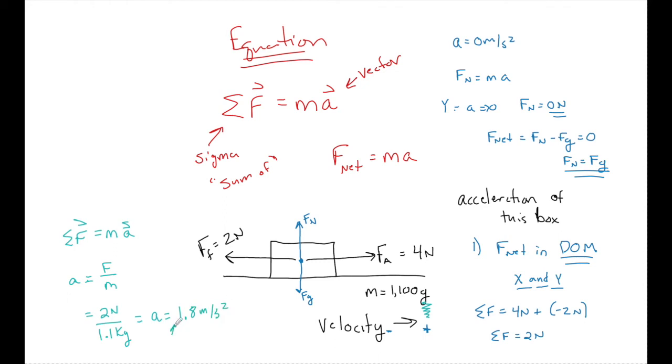We can now say that the acceleration of this box is equal to 1.8 meters per second squared. This number is a positive number, so that means it is to the right. Remember acceleration is a vector, so it needs a direction.